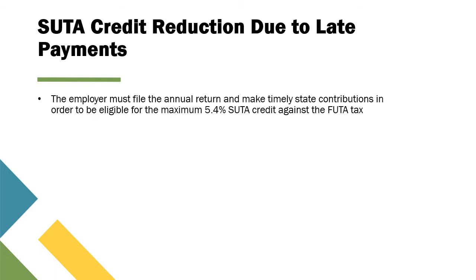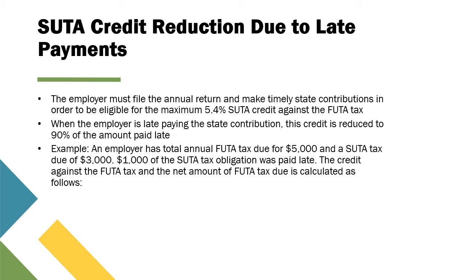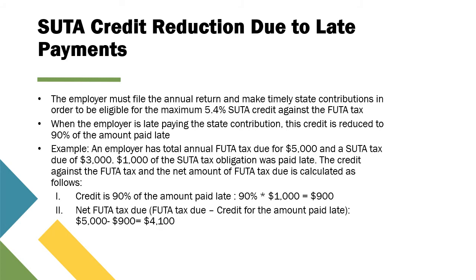The SUTA credit can be reduced due to late payments. The employer must file the annual return and make timely state contributions to be eligible for the maximum 5.4% SUTA credit. When the employer is late paying the state contribution, the credit is reduced to 90% of the amount paid late. For example, if an employer has total annual FUTA tax due of $5,000 and SUTA tax due of $3,000 with $1,000 paid late, the credit is 90% of $1,000 equaling $900, making the net FUTA tax due $5,000 minus $900, or $4,100.